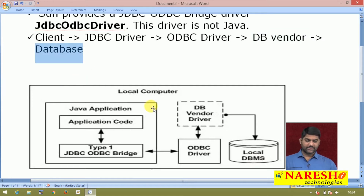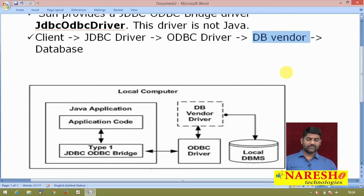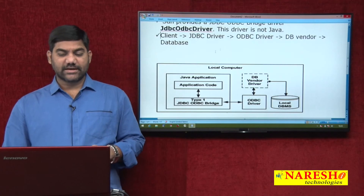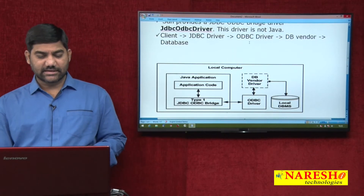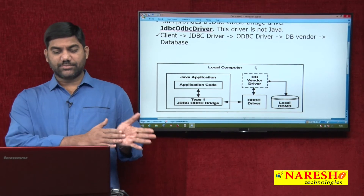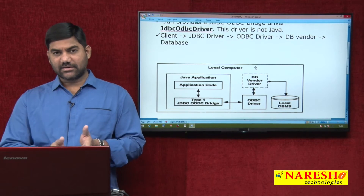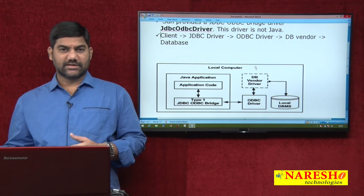The database sends the output or error messages to the DB vendor driver, which passes the call to ODBC, ODBC passes to the bridge driver, and the bridge driver returns to our program. So many translations are happening here: first the bridge-understandable translation, then ODBC translation, then vendor translation, and finally database translation.